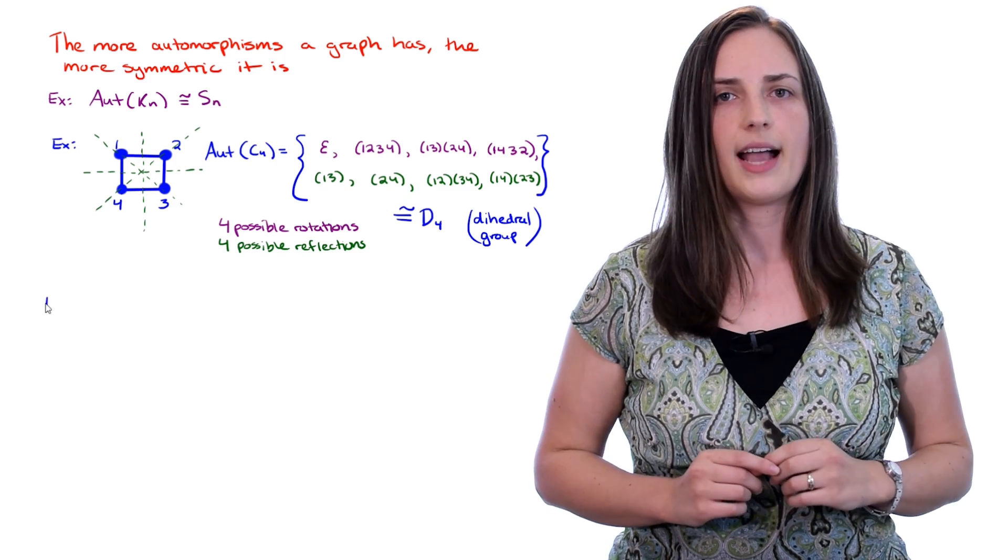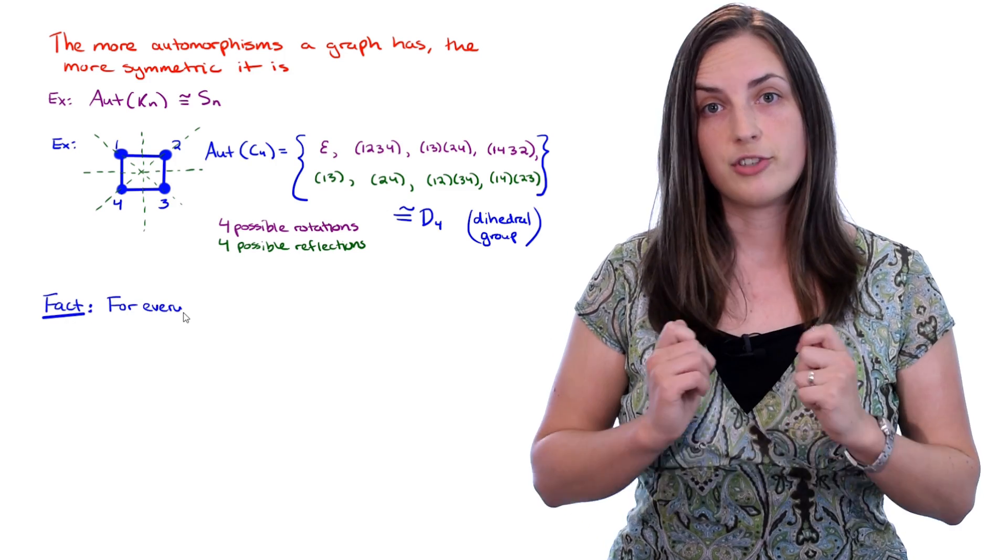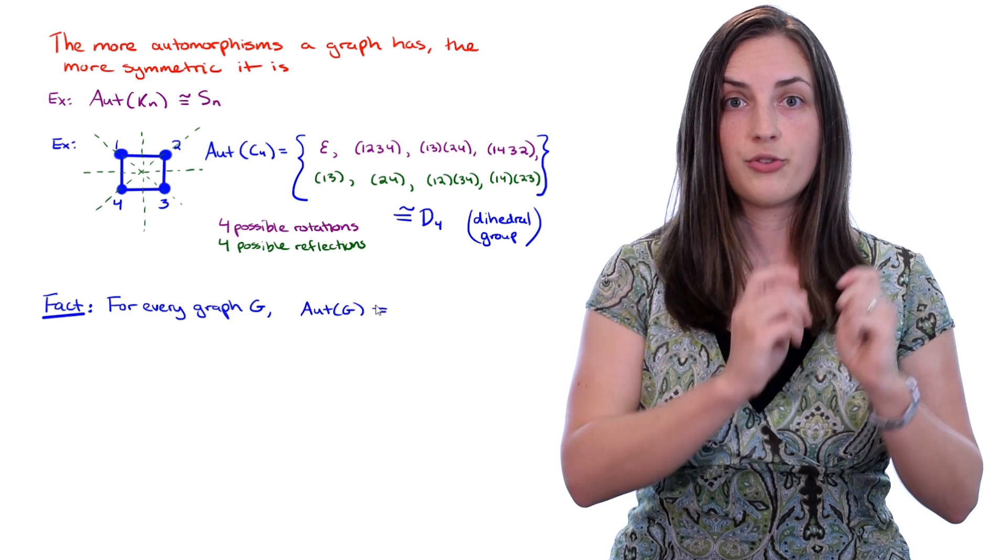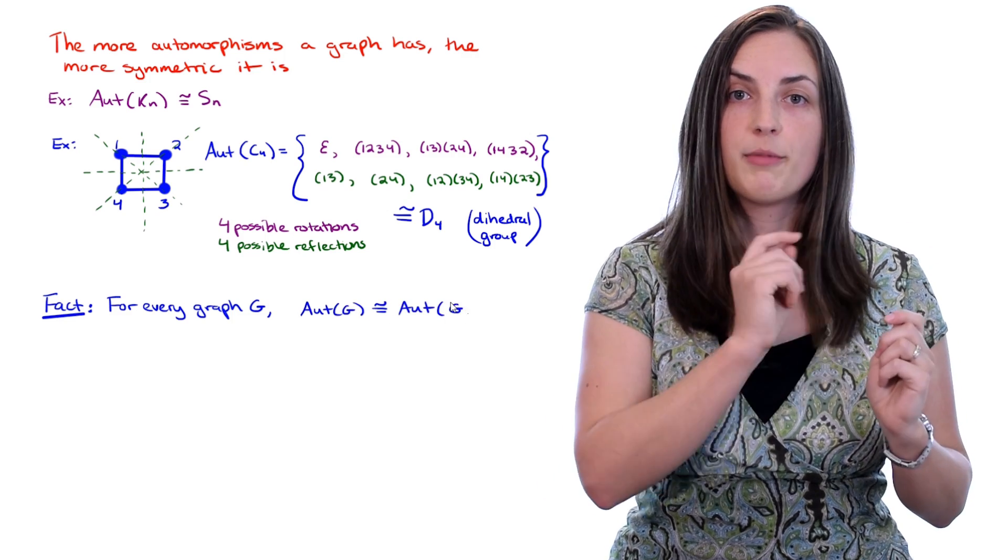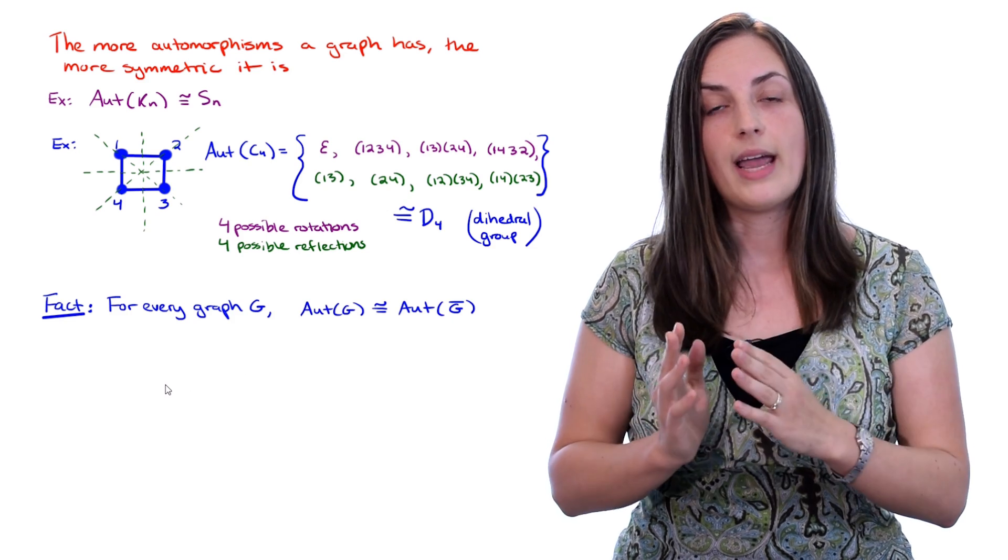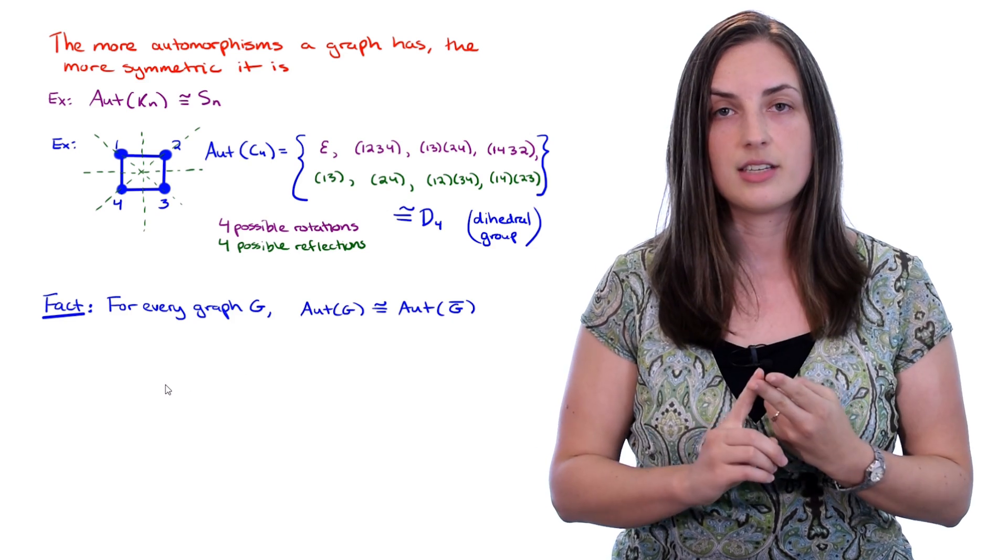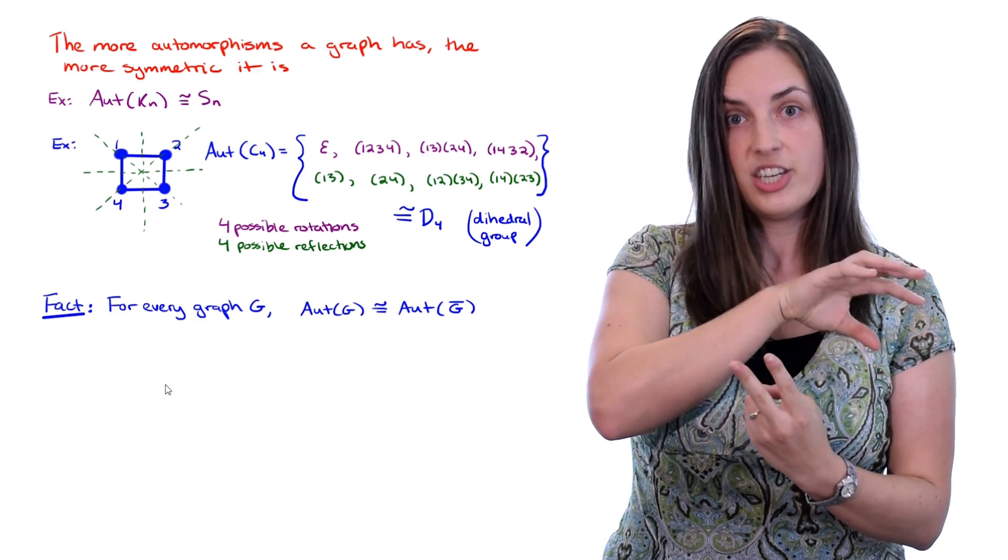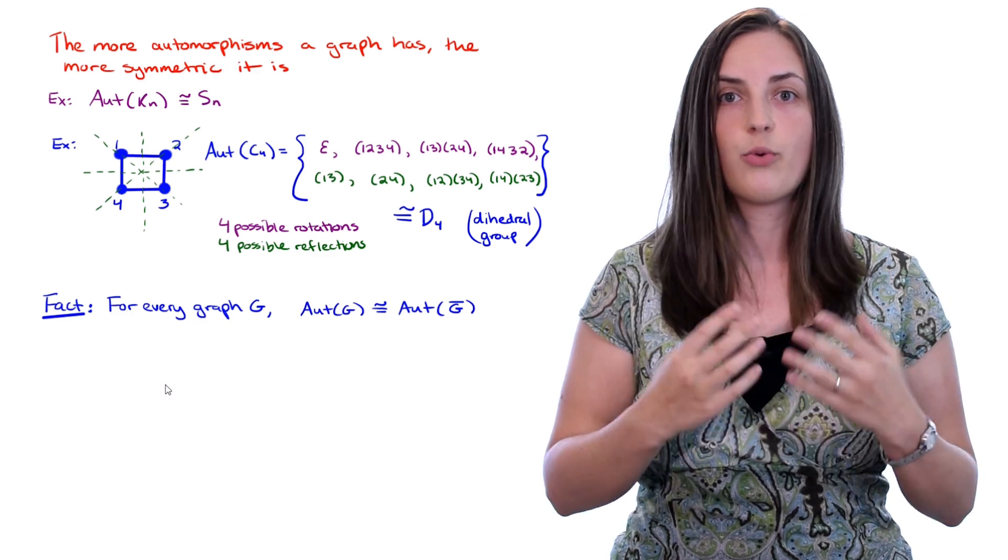Now here's an important fact, and it's not too difficult to see. For any graph G, the automorphism group of that graph is isomorphic to the automorphism group of the complement graph. This is because an automorphism is mapping in a way that preserves adjacency and non-adjacency. So the complement non-adjacency means adjacency, and adjacency means non-adjacency. That's why it works.